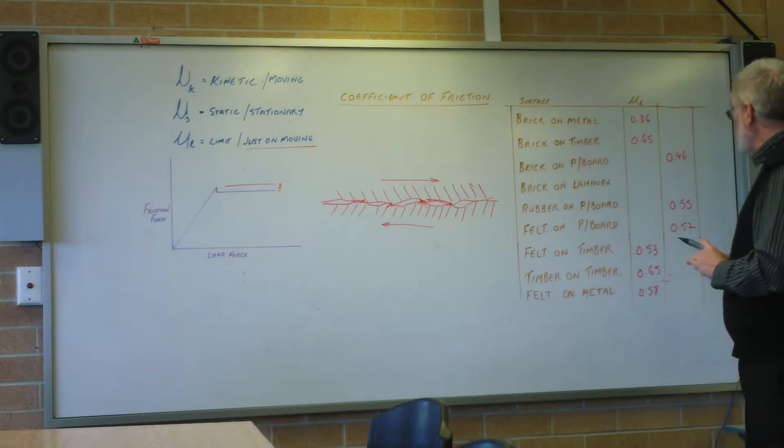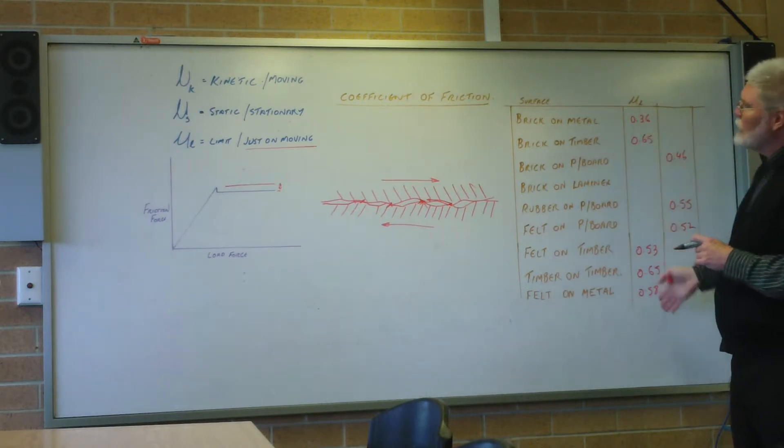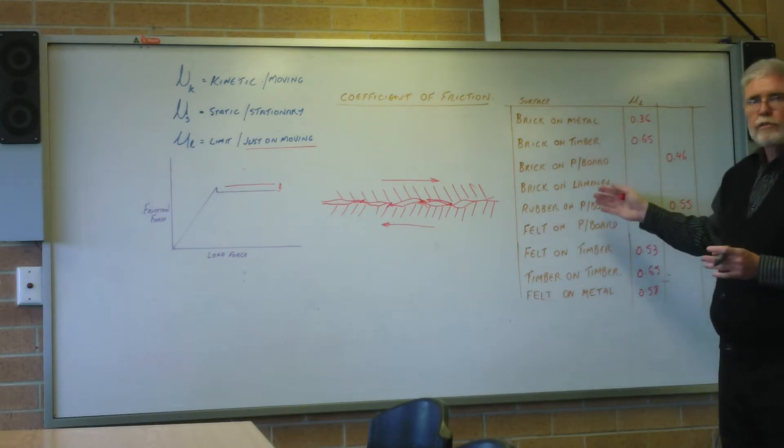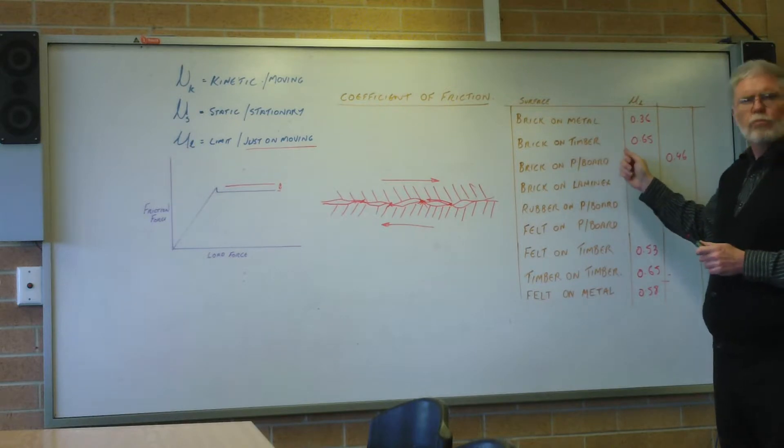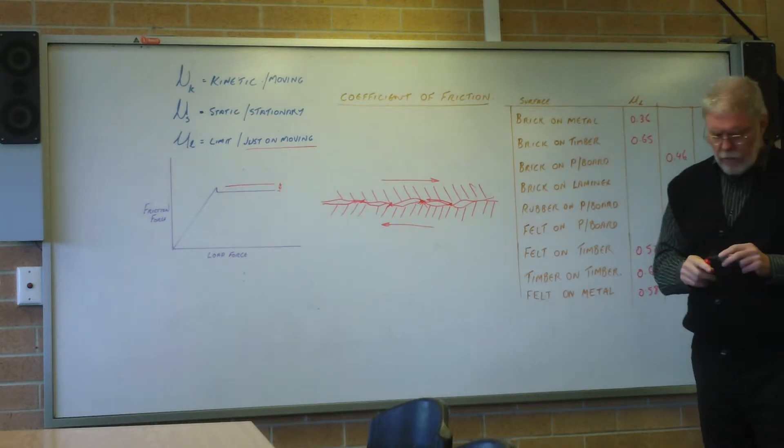Rubber on cloth gave you 0.62. You can see what we've done - we're just trying different surfaces and we're getting values. Now these are not definitive values because it's not a really controlled situation.